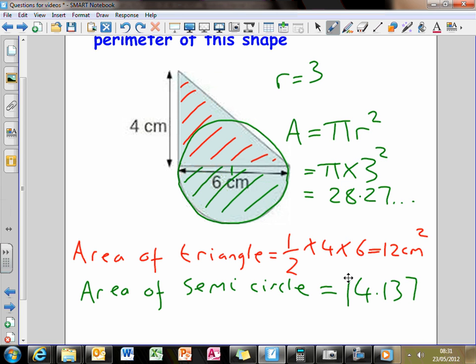So, now the area of that compound shape is the area of the triangle, which we used at half times the base times the height, plus the area of the semicircle, adding those two numbers together, so therefore, area is equal to,